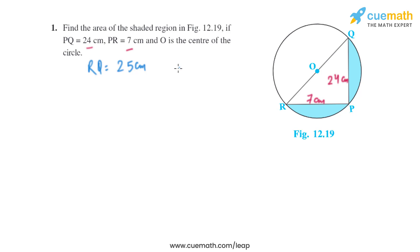So we have got the length of RQ, that is basically the diameter of the circle. So we will get the radius, that is 25 divided by 2 centimeters.